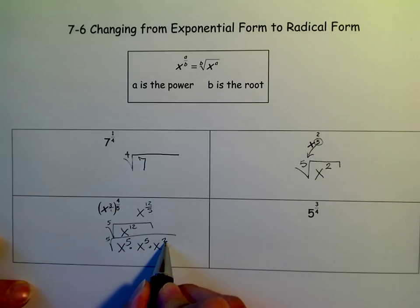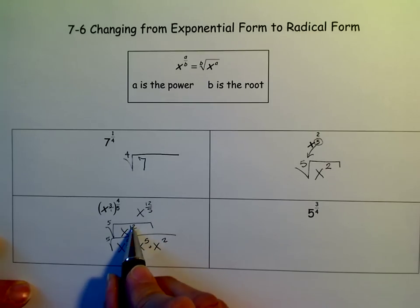So we have 5 plus 5 plus 2, because that's our rule. When we're multiplying variables, we add the exponents. 5 plus 5 plus 2 is 12, so it's the same thing.